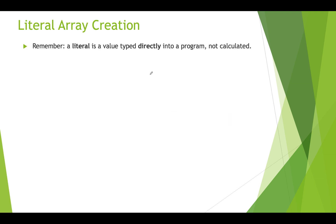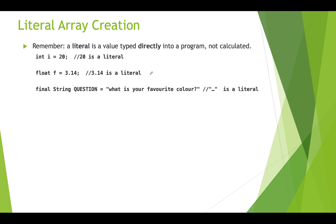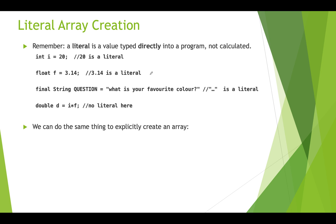Literal array creation is a second way of creating a new array. A literal is a value that you type directly into a program, not one that is actually calculated. So int i equals 20 — 20 is a literal. Float f equals 3.14 — 3.14 is a literal. The string 'what is your favorite color?' is a literal value. In double d equals i times f, there's no literal; we're calculating the value from other variables. So we can use literals to also create arrays.